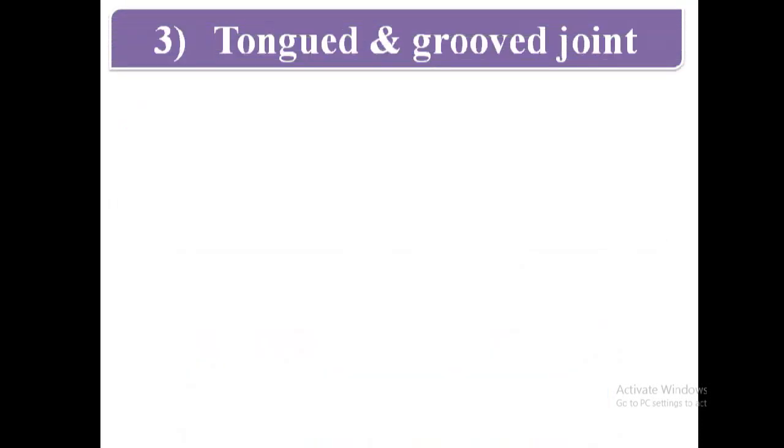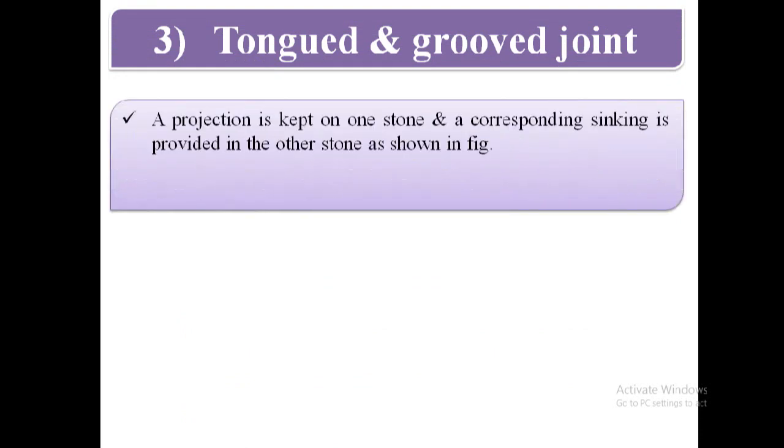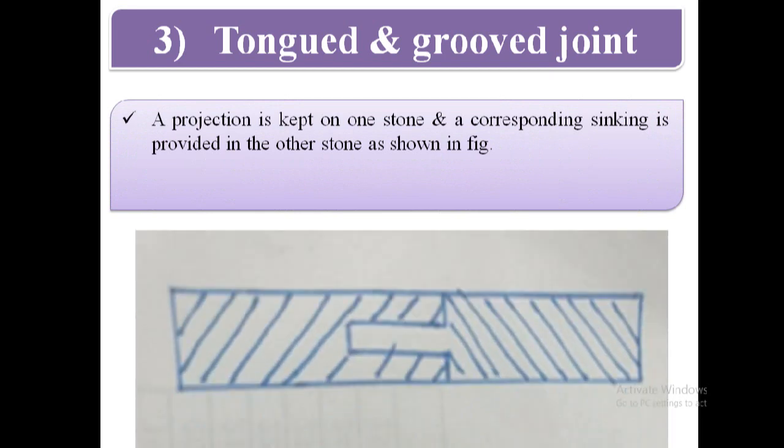Third type of joint is tongue and groove joint. In this type of joint, a projection is kept on one stone and a corresponding sinking is provided in the other stone as shown in figure. In this figure, we can see